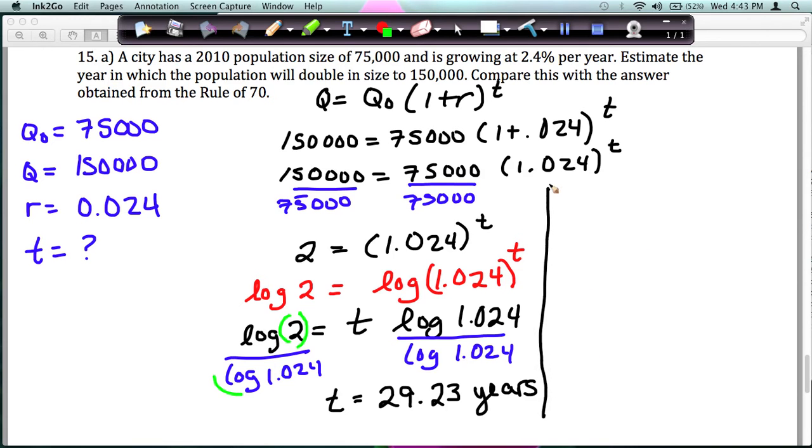Now compare this answer of a little over 29 years to the rule of 70. The rule of 70 says that your time is approximately, when you're looking at doubling, equal to 70, that's why it's called the rule of 70, divided by your rate written as a percent, not a decimal, so 2.4. When you do this on your calculator, you get about 29.17 years.